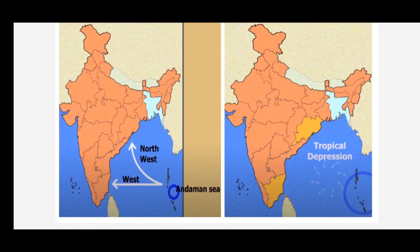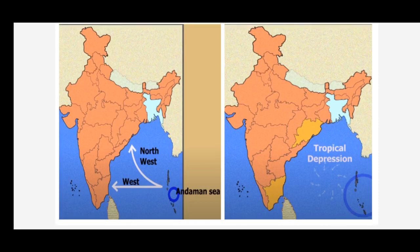The low pressure conditions are now transferred to the center of the Bay of Bengal by early November. This shift of the low pressure area is marked by cyclonic depressions which originate between 12 degrees north and 17 degrees north and travel west or northwest over West Bengal. This results in heavy and widespread rain on the coast of Tamil Nadu and parts of Odisha.